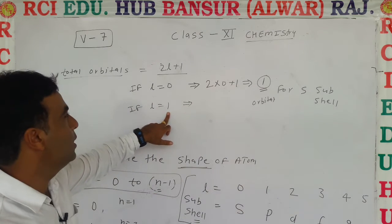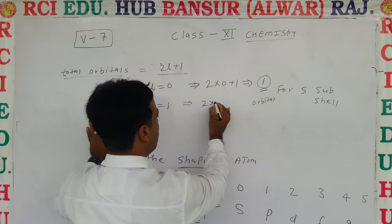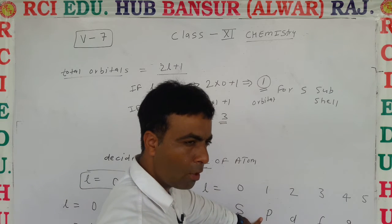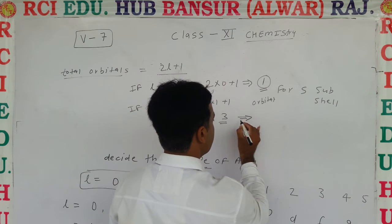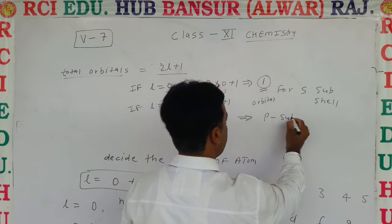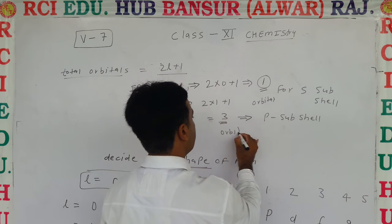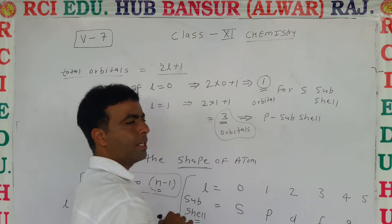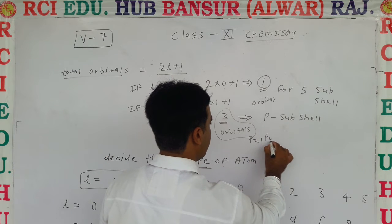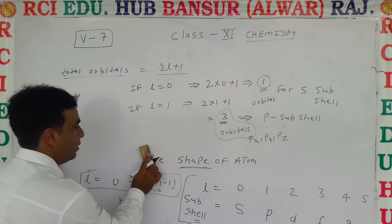If l = 1, put it in the formula: 2 × 1 + 1 = 3. So for the p orbital there are three orbitals in the p sub-cell. These three orbitals are px, py, and pz.